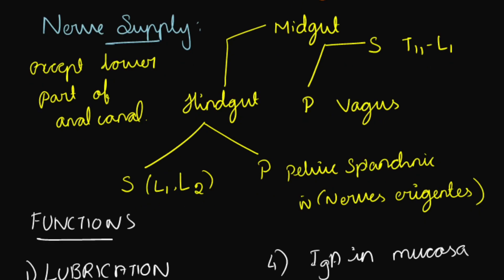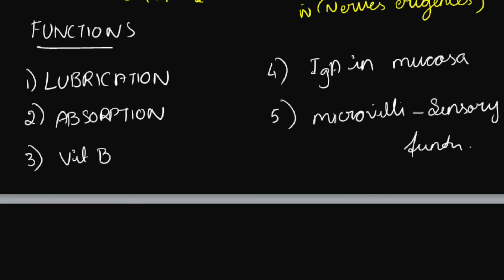The sympathetic supply is through the lumbar sympathetic chain and parasympathetic is through the pelvic splanchnic nerve, also known as nervus erigens. This nerve supply is an exception to the lower part of the anal canal. Regarding functions: lubrication, absorption, and vitamin B synthesis by bacterial flora in the colon; IgA in the mucosa helps in protection against microorganisms and bacterial invasion; microvilli in the inner wall of the intestine help in sensory function as well.